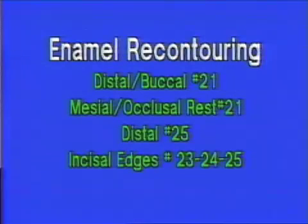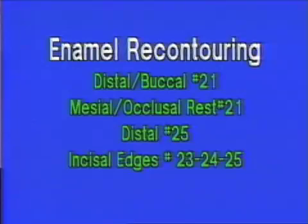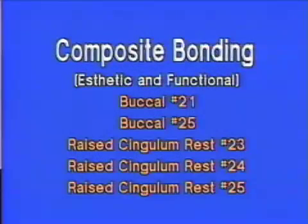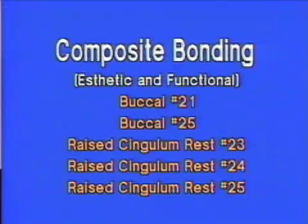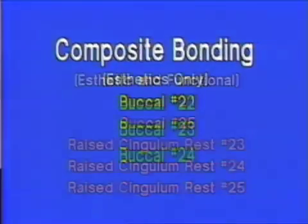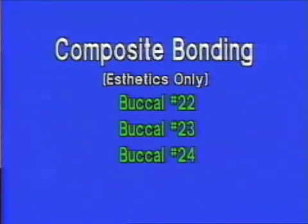This, then, is our proposed treatment plan for this particular patient. There are four areas of enamel contouring and eight areas of composite bonding — five for aesthetic and functional needs of the partial denture, and three areas for aesthetics only.